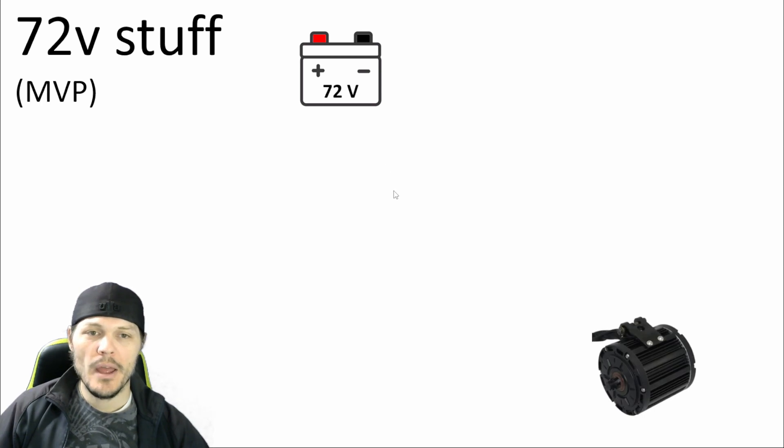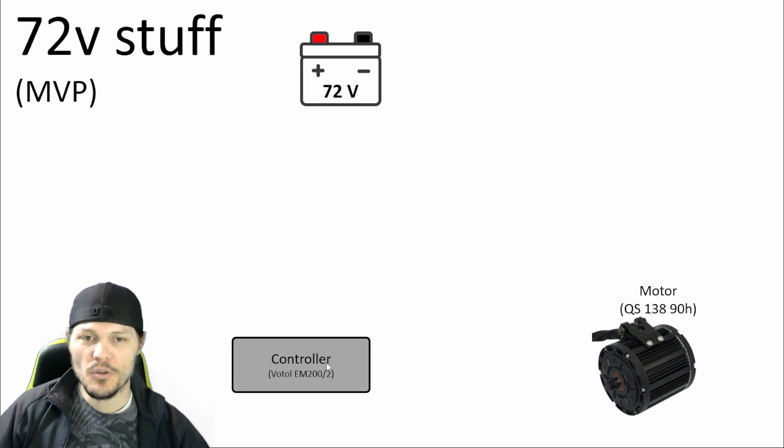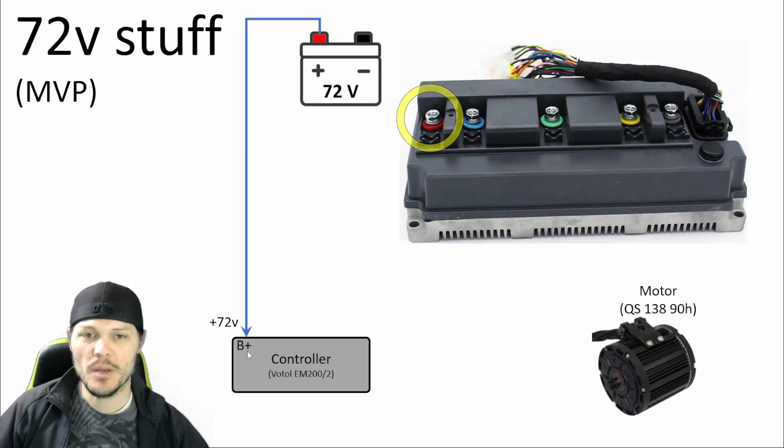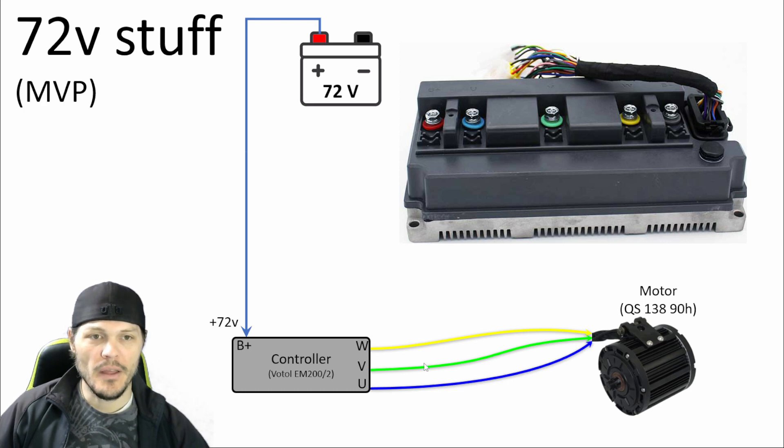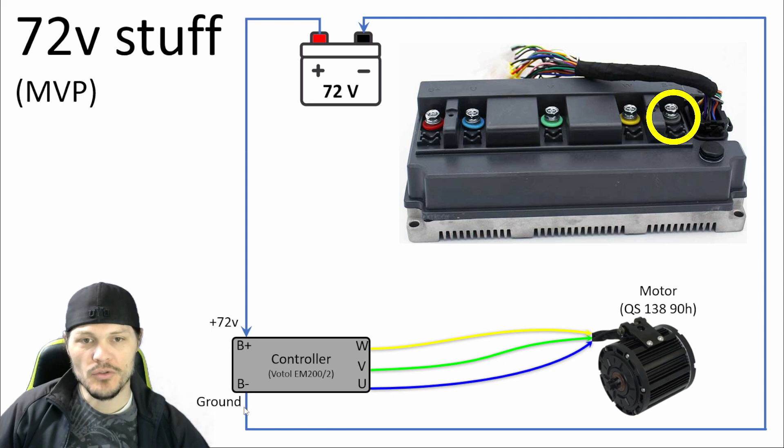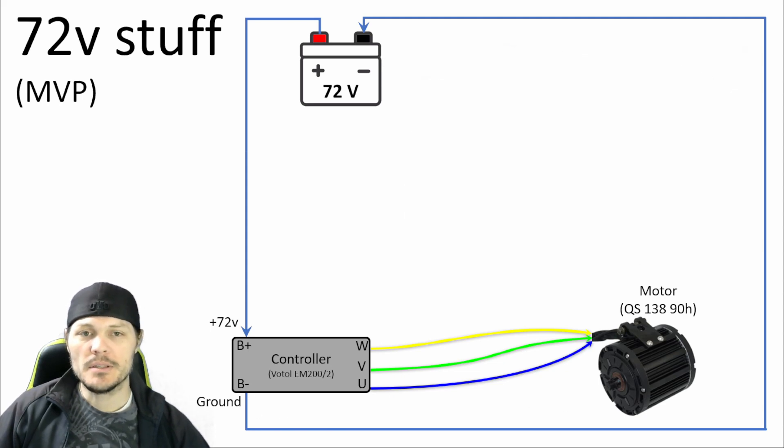So here we go. We need the battery, we need the motor, and we need the motor controller. My motor controller is a Votol EM200-2, and my motor is a QS13890H. Even though these are the ones I'm using, this same general diagram should apply to a lot of different electric vehicle applications. The battery does not directly communicate with the motor. The battery sends power to the controller. So we've got a 72 volt line going here. It's a little thicker line because that's going to be a heavier gauge wire. That positive 72 volts needs to tie into the location labeled battery plus. Also some large terminals on the controller are the phase wires. Those are labeled W, V, and U, and they're color coded, and those tie into the motor. And then the battery minus on the controller has to find its way back to battery negative.